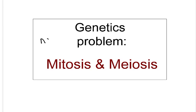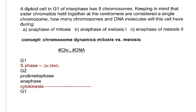This genetics problem is about mitosis and meiosis. A diploid cell in G1 of interphase has eight chromosomes, so you should write 2n equals 8. Keep in mind that sister chromatids held together at the centromere — a replicated chromosome — are considered a single chromosome with two DNA molecules, as opposed to an unreplicated chromosome.